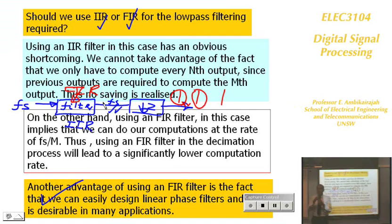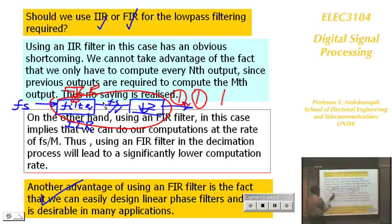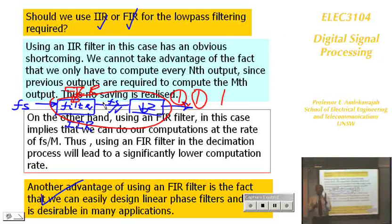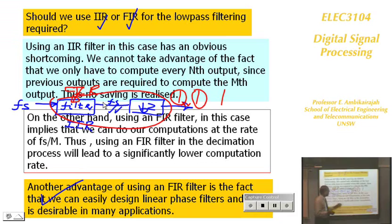For FIR, the filter and downsampler are effectively combined: you only calculate every Mth output sample, skipping the rest. For IIR, you must calculate all samples before discarding. Therefore, FIR filters are used for computational efficiency in decimation applications. You should be able to explain why FIR is preferred over IIR for this digital low-pass filtering in decimation.